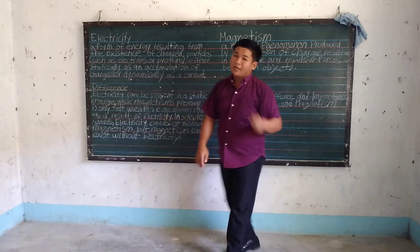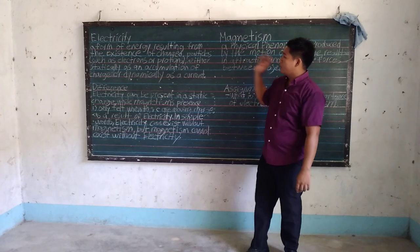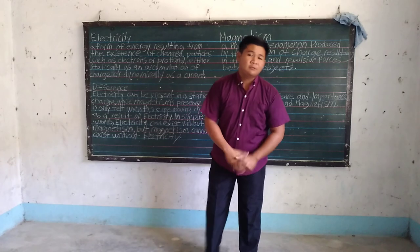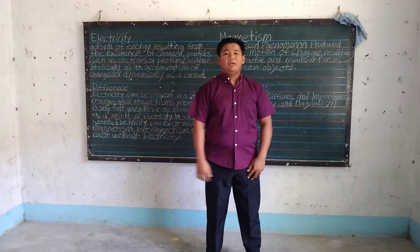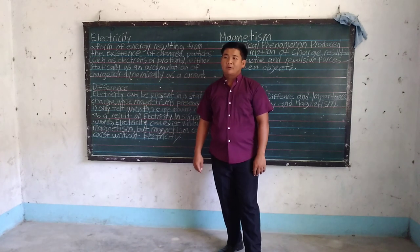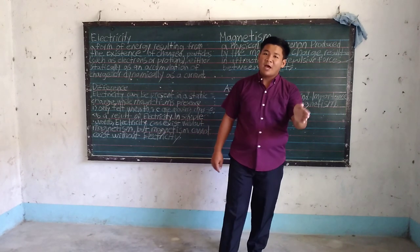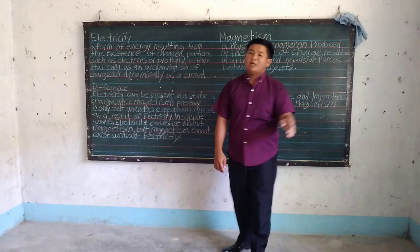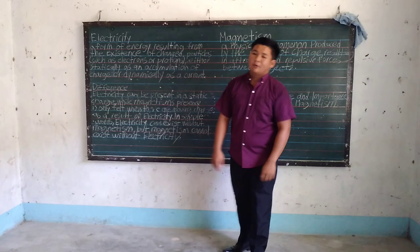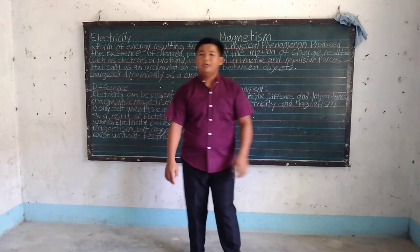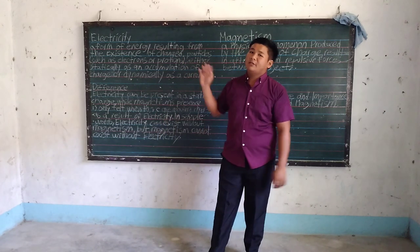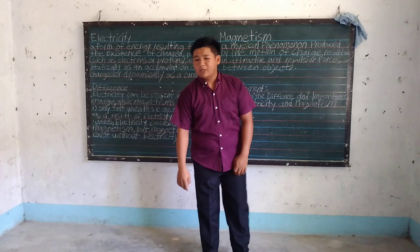Now, recitation — would you please recite, without looking at the board, Student 1, would you please recite the definition of magnetism? Okay, you almost have it halfway. Next time, you must completely define it. Student 2, would you please define electricity without looking at the board?